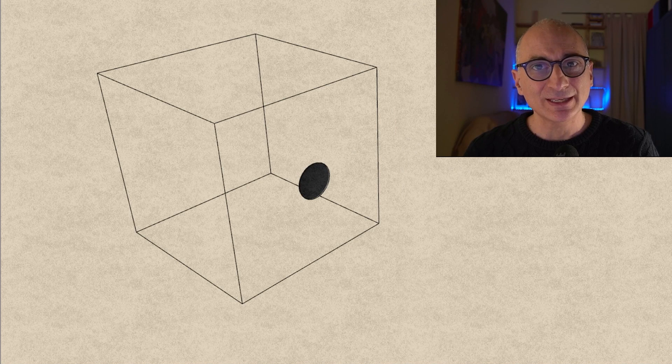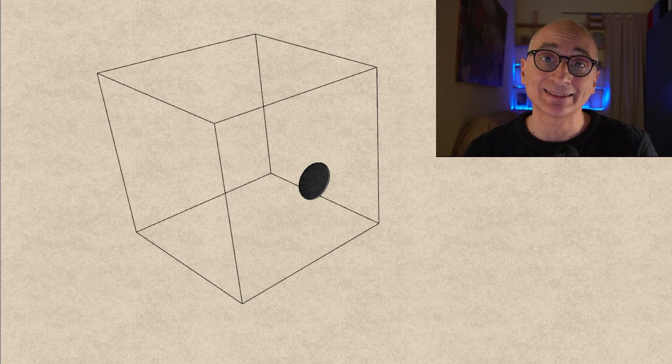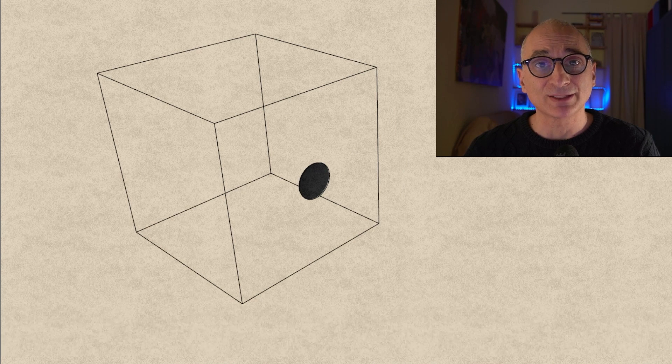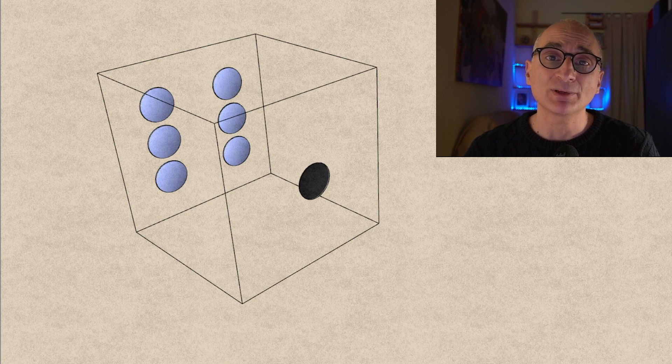And for the solution consider that in any standard dice with six faces the sum of the opposite faces is always seven. So opposite to one there's a six.